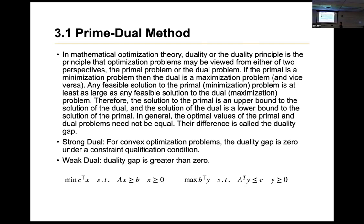The first one is the primal-dual method. In the primal-dual method, if the function has a duality property, you can minimize your objective function. You can also solve it by another method called duality, which means you can maximize the function instead.